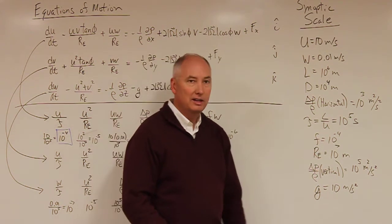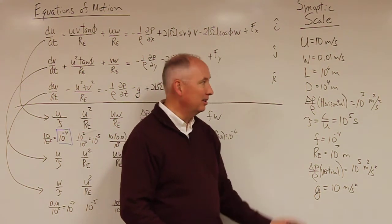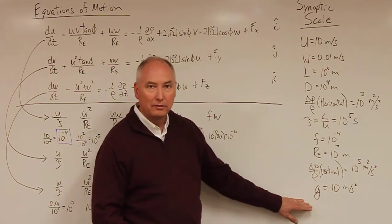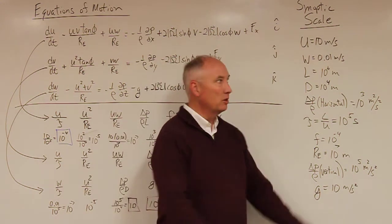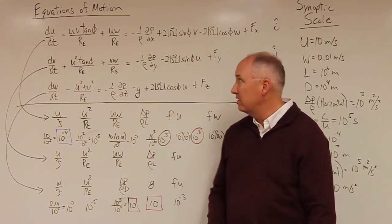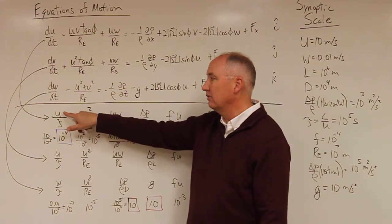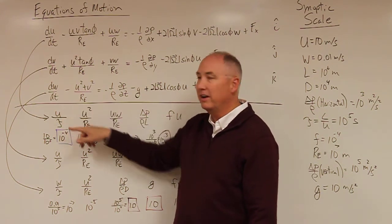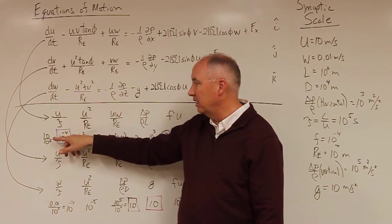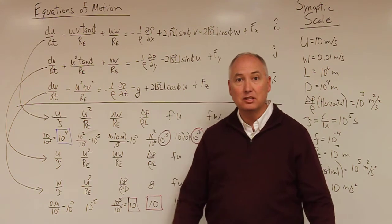The radius of the Earth is approximately 10 to the 7th meters. The delta-p over rho in the vertical is much bigger than horizontal — it's 10 to the 5th meters squared per second. And gravity is 10 meters per second squared. Now that we have these scales, we can look at individual terms. The first term, du/dt, scales as velocity divided by time scale: 10 meters per second divided by 10 to the 5th seconds, giving 10 to the minus 4th.